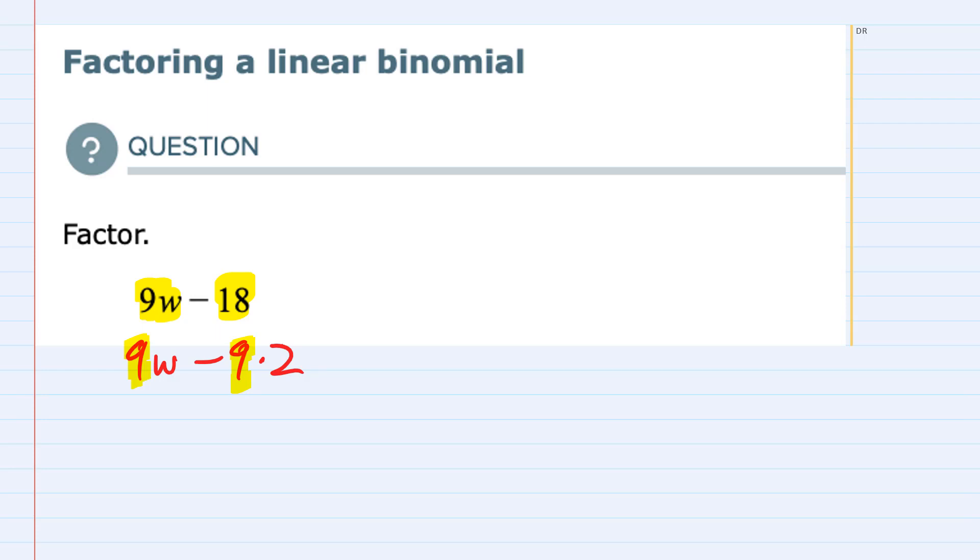You may have been thinking of a 3. We could have written this as 3 times 3w minus 18 is 3 times 3 times 2. If I would have broken it down into the smallest factors, as demonstrated here, I can see that the first one has two 3s and the second one also has two 3s. That's what we have expressed here with the 9s.